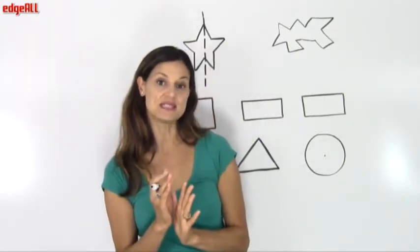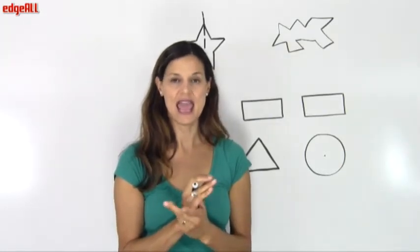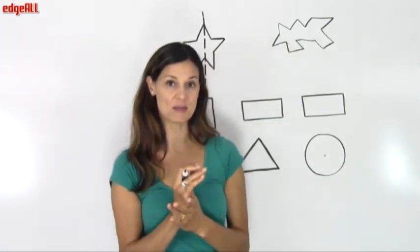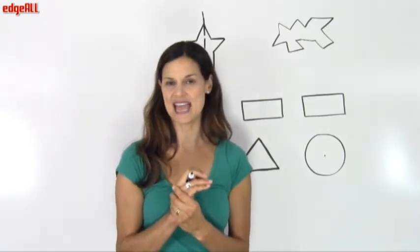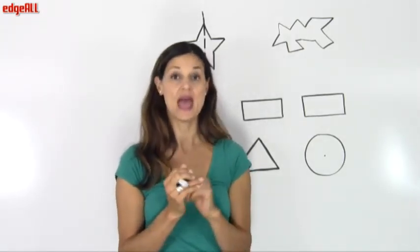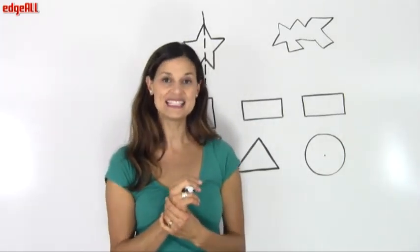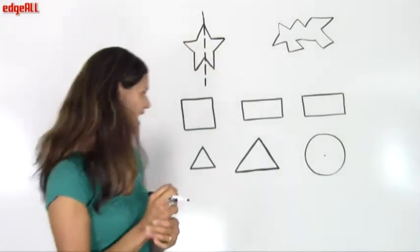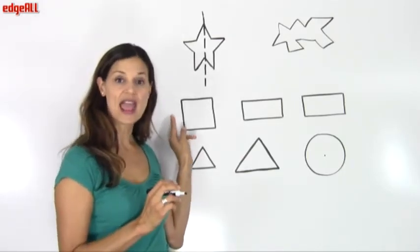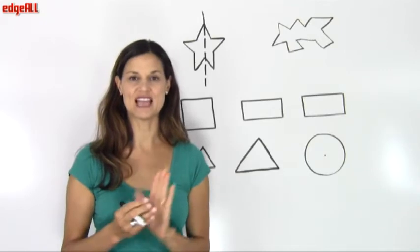Now some shapes have more than one line of symmetry. We call these symmetrical shapes because a symmetrical shape has to have at least one line of symmetry — but if it has more, it's also a symmetrical shape. Let's take a look at a square. A square has several lines of symmetry.